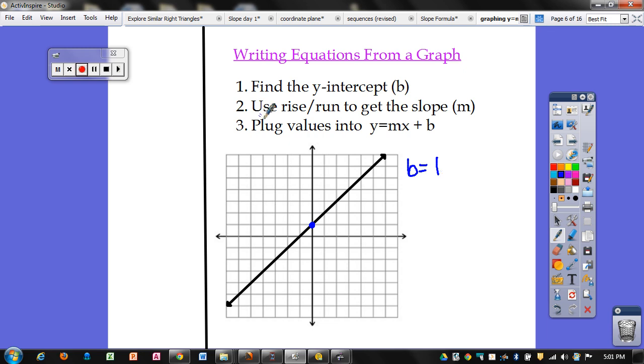Now you're going to use rise over run to get the slope, m. So you're going to pick any other point on this graph, and then you're going to count the rise over the run to get your slope. So I'm going to pick this point. You can use any point you see. Right here I have a bunch that I could have used, so I'm just picking this one at random. So m is equal to the rise over the run. So I'm going to count from the left point to the right point. My rise is going to be up 2. And then my run is going to be across 2. So I have 2 over 2, which simplifies to 1.